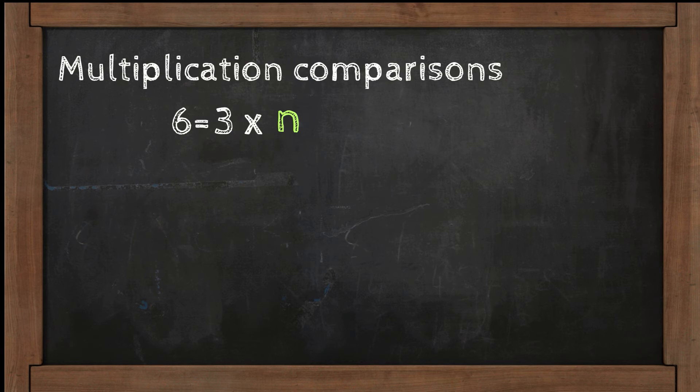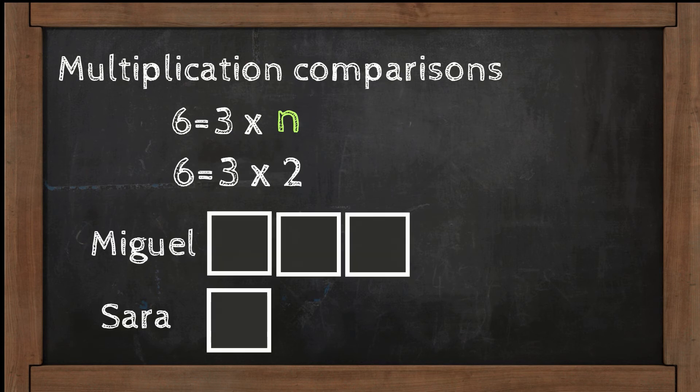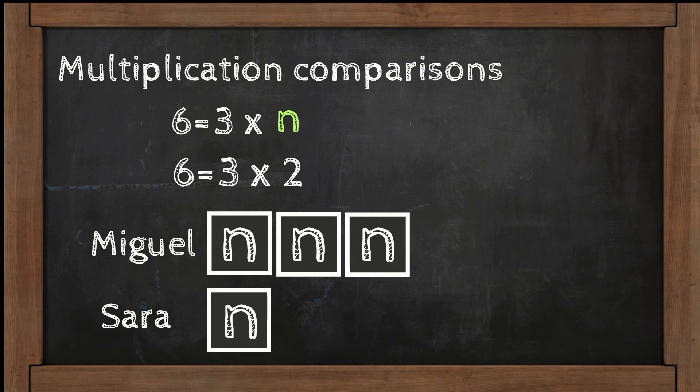n refers to the unknown number of rabbits Sarah has. Or we can say n is how many rabbits Sarah has. So Miguel has 3n and Sarah has 1n.